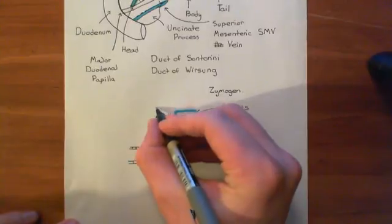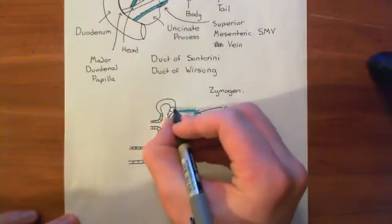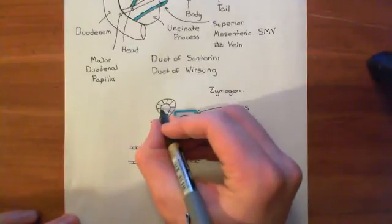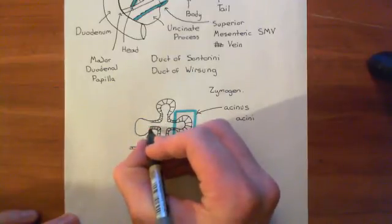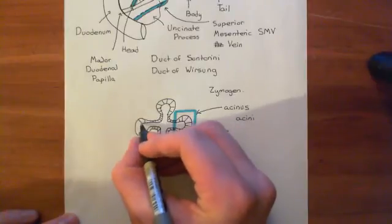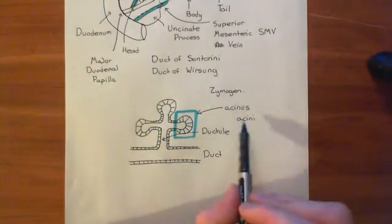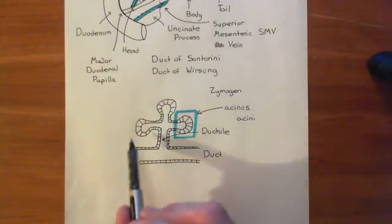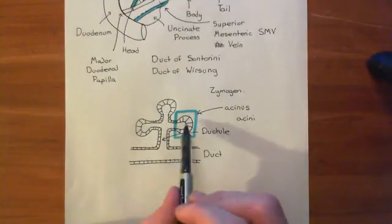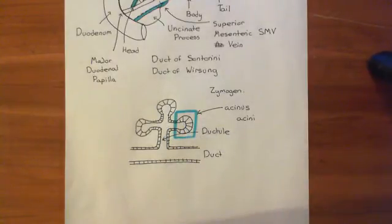You're going to have multiple acini all coming off a single ductule. These large cuboidal epithelial cells are so large because they have large stores of the material they're secreting and the factories for making the zymogens. The cells of the pancreatic acini are involved in the exocrine secretion of zymogens, which will help with the digestion of proteins and other things such as carbohydrates and lipids.